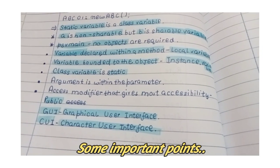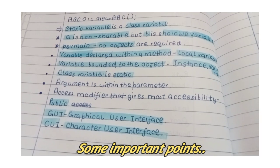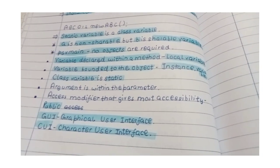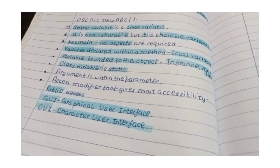These are some important points which can be asked in the form of MCQs. So, you may just read it like variable declared within a method is local variable and variable bounded to the object is instance variable. Let's start up with output questions.